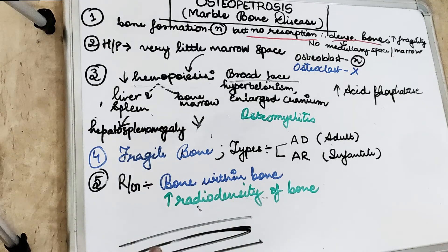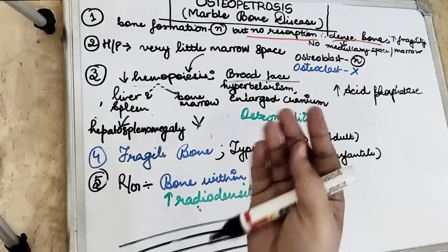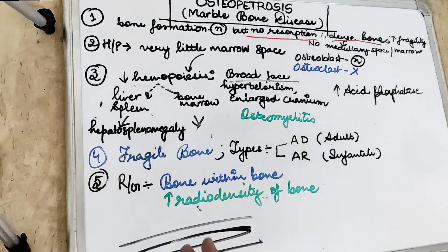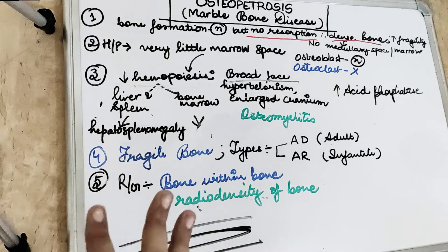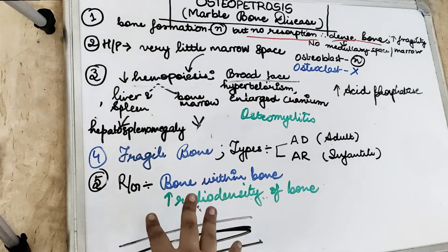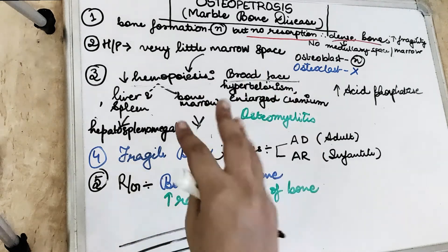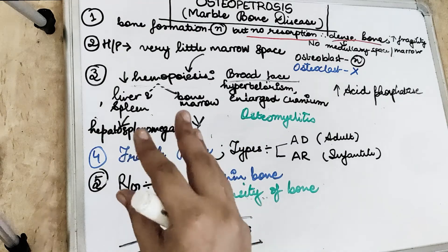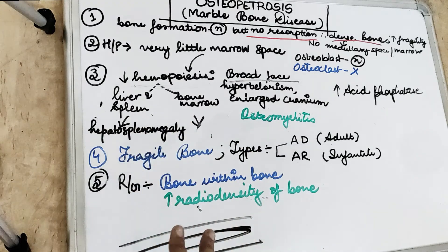Regarding dental features, the teeth have defects in the enamel, there are short roots, and there is also a delayed pattern of tooth eruption associated with osteopetrosis.